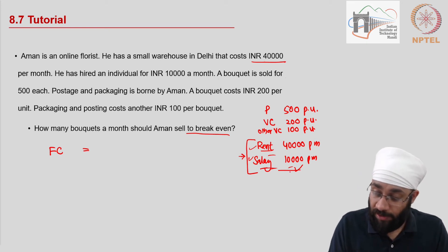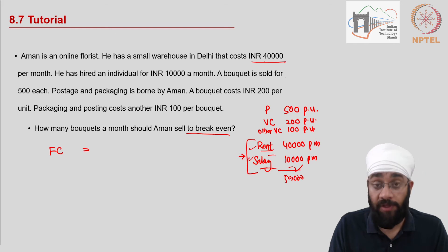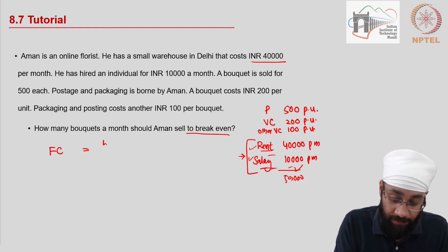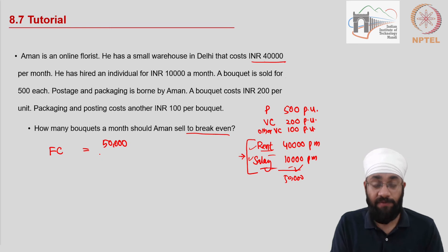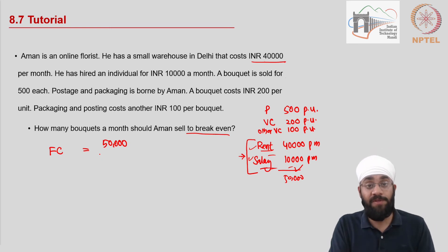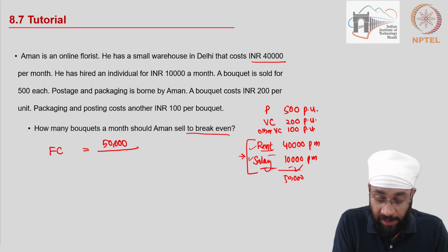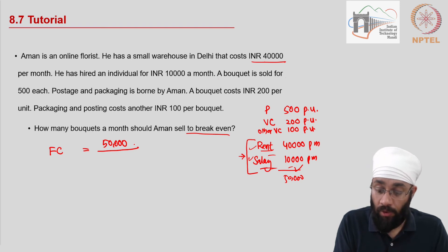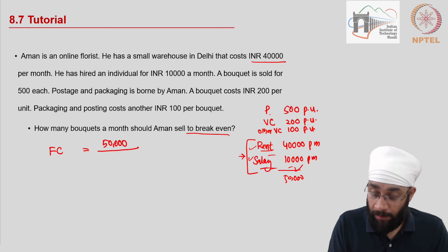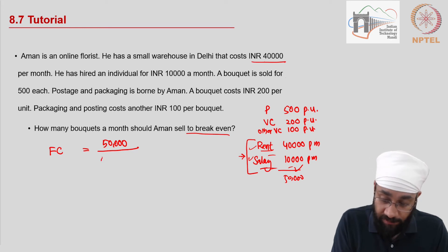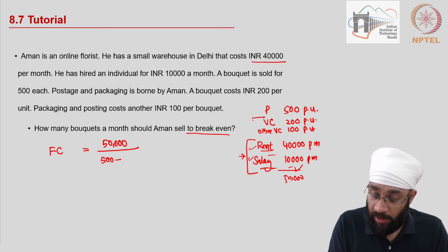So the fixed cost comes out to be 50,000 for that month. In a month, you have to spend a minimum of 50,000 whether you do any business or not. Now divide this by contribution per unit. Contribution per unit = P minus VC = 500 minus the variable cost.